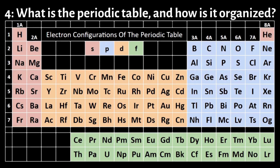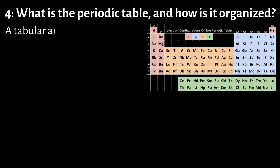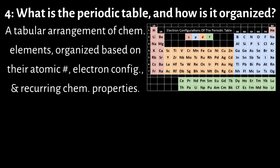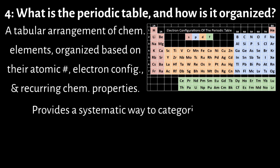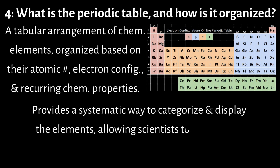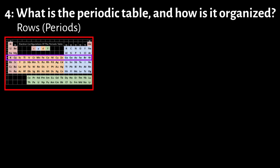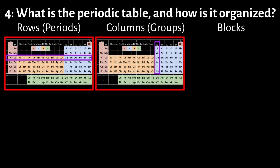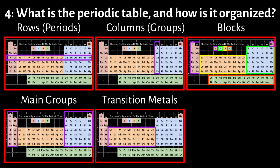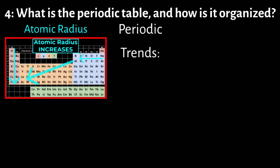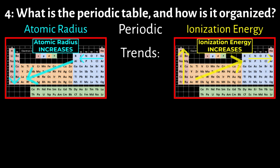Number 4: What is the periodic table and how is it organized? The periodic table is a tabular arrangement of chemical elements organized based on their atomic number, electron configuration, and recurring chemical properties. It provides a systematic way to categorize and display the elements, allowing scientists to understand their relationships and predict their behaviors. The periodic table is organized by rows called periods, columns called groups, blocks, main groups, transition metals, inner transition metals, and by periodic trends such as atomic radius, ionization energy, and electronegativity.